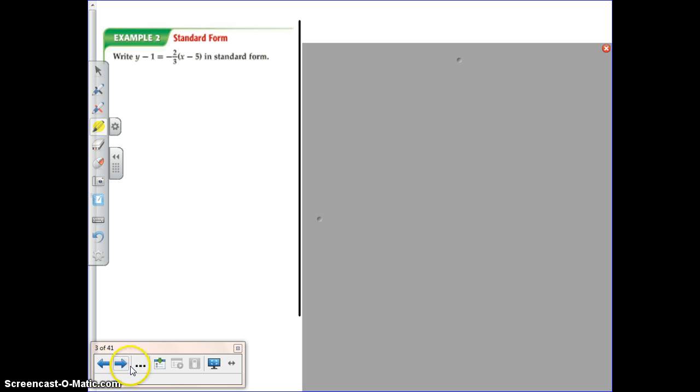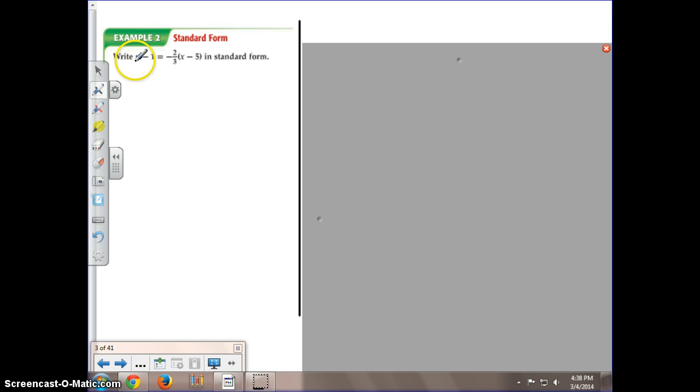So, for example 2, it asked me to take this equation and write it in standard form. So I can see right now that this is written in point-slope form, and I could pull out the point if I really wanted to, so it's always y minus y1, so my y value is 1, and x minus x1, so I know my x value is 5.